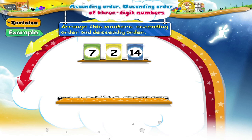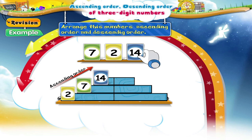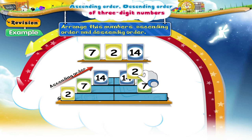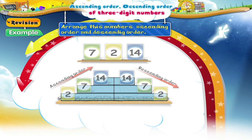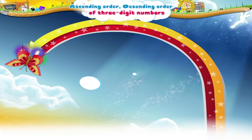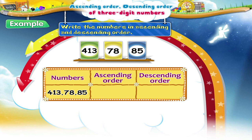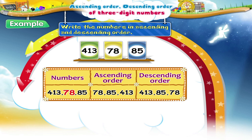Here, take some more stickers. Now write the ascending order and the descending order. The ascending order is 78, 85, and 413. The descending order is 413, 85, and 78.